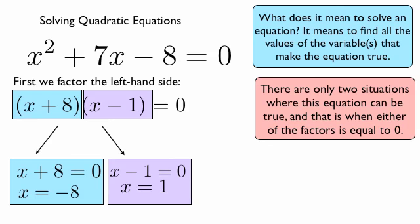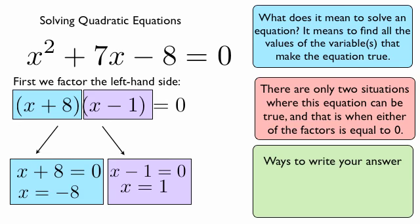Now, how do we write our answer? There are many ways of writing it to get the idea. I think an informal way is writing x is equal to negative 8, x is equal to 1, or maybe x is equal to negative 8, comma 1.